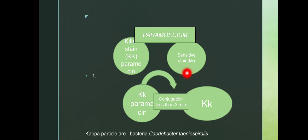Now if we perform conjugation for less than three minutes, what will happen? The genes will be interchanged between both the killer strain and sensitive strain of the Paramecium.